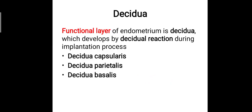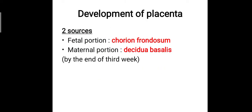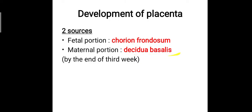These are the functional layers of the endometrium — the decidua — which develop by the decidual reaction during the implantation process. They divide into decidua capsularis, decidua parietalis, and decidua basalis. The development of the placenta comes from two sources: the fetal portion, which is the chorion frondosum, and the maternal portion, which is the decidua basalis. This occurs by the end of the third week.